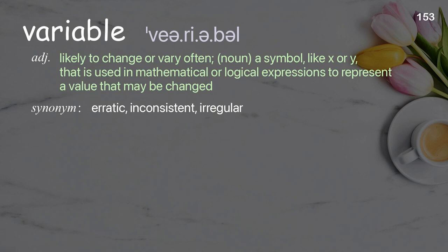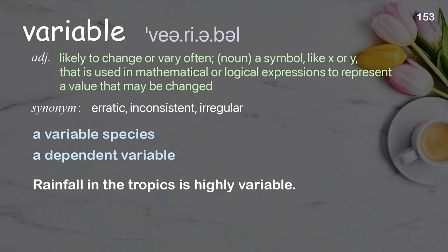Variable: likely to change, or very often changing; noun, a symbol like x or y used in mathematical or logical expressions to represent a value that may be changed. Examples: a variable species; a dependent variable; rainfall in the tropics is highly variable.